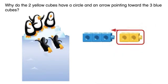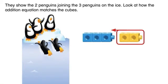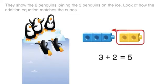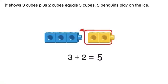Why do the two yellow cubes have a circle and an arrow pointing toward the three blue cubes? They show the two penguins joining the three penguins on the ice. Look at how the addition equation matches the cubes. It shows three cubes plus two cubes equals five cubes.